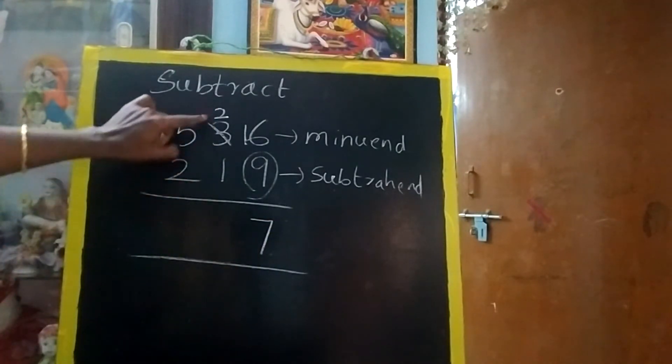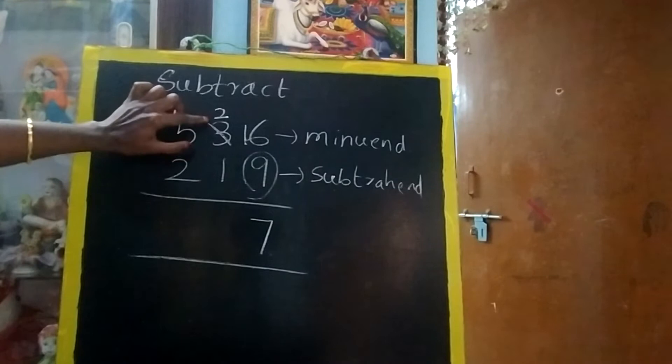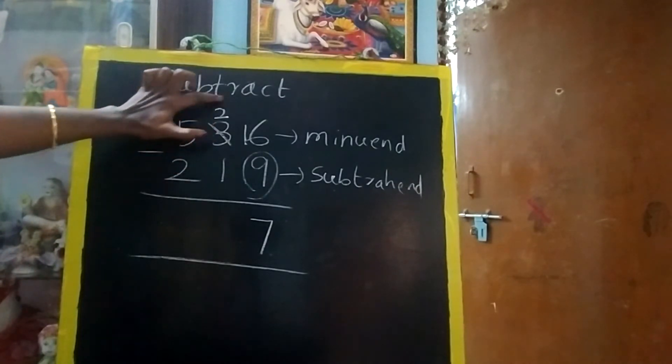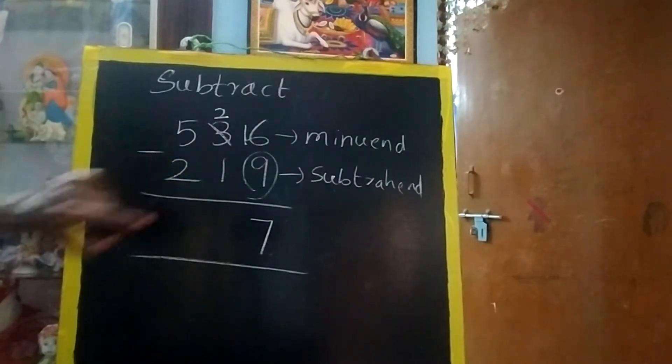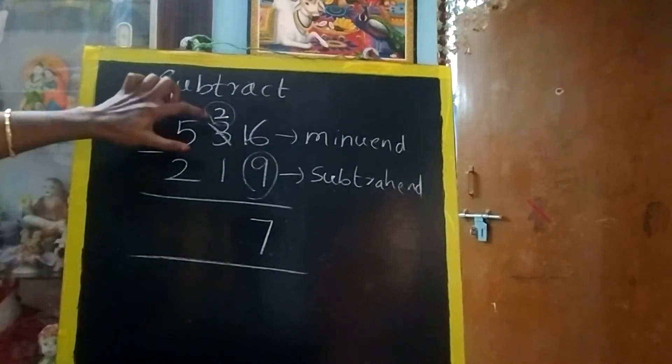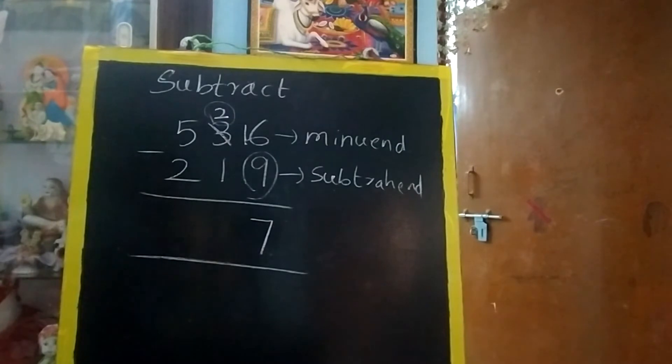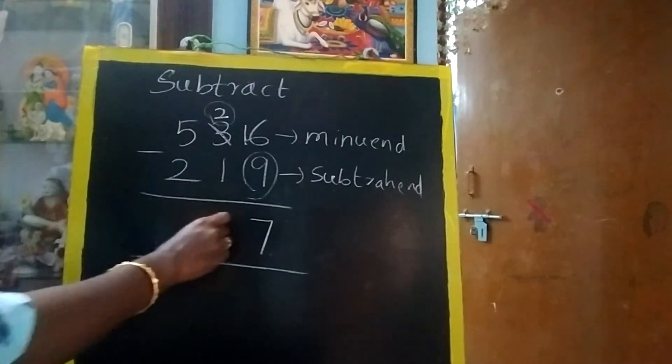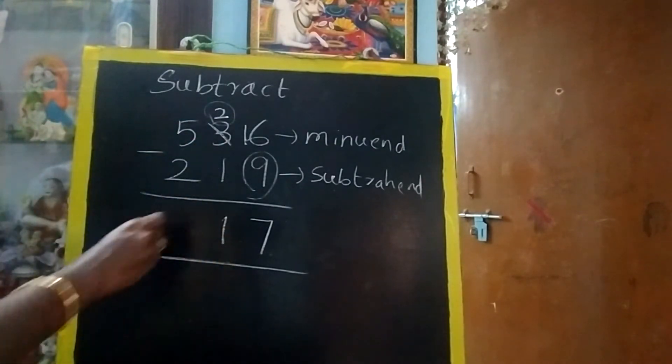Now again circle method. When you are doing circle method, you should not see the cancelled one. The number on top right, this only you should see. 2 is greater or 1 is greater? Yes, 2 is only greater. The circle is in the top. Should we borrow? No borrowing. 2 minus 1, 1. 5 minus 2, 3.